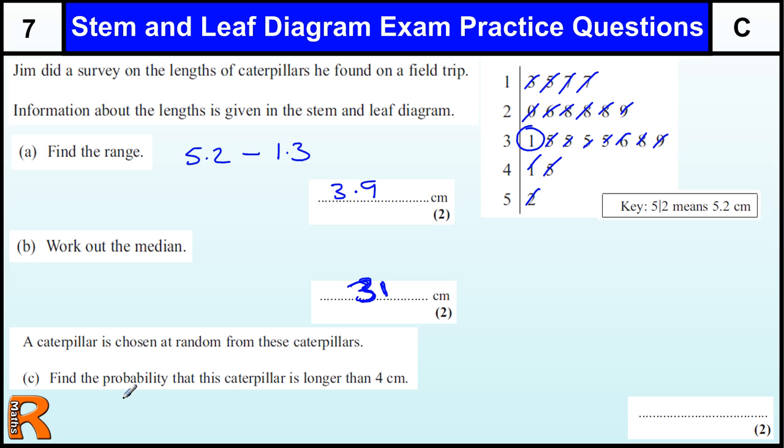A caterpillar is chosen at random from these caterpillars. Find the probability that the caterpillar is longer than 4 cm. So not technically a stem and leaf diagram question, but it is using the information from the diagram to do a probability question. How many are bigger than 4 cm? So we've got 1, 2, 3. 3 are bigger than 4, and there's 21 caterpillars. So the probability that it's bigger than 4 is 3 over 21 for two marks.